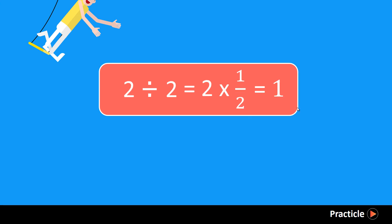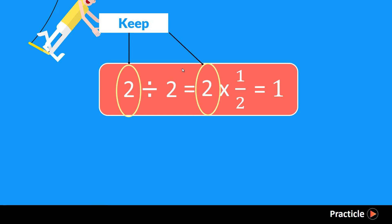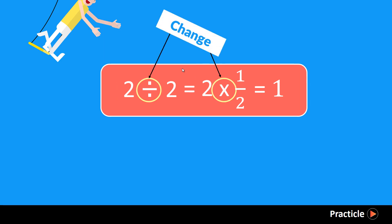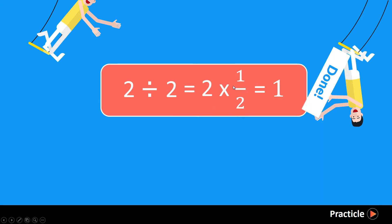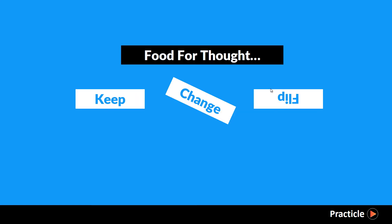Now let's look at the second question and apply the same steps. To transform 2 divided by 2 over 1 into a multiplication problem: first, keep the first number; then change the sign from division to multiplication; and lastly, flip the second number, so 2 over 1 becomes 1 over 2. When we solve this, we get our answer. From these two examples, do you see the pattern? It's keep, change, flip — keep the first number, change the sign, and flip the second number.